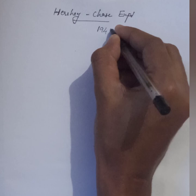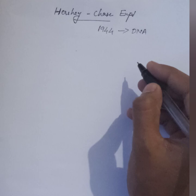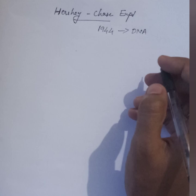Hi everyone, welcome to Sanus Vartag Academia. Today we are going to discuss about the Hershey and Chase experiment. In the last videos we have discussed about the Avery's experiment which was done in 1944. From that experiment we can understand that the genetic material is DNA.